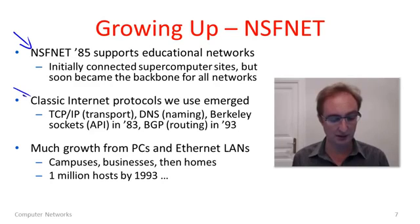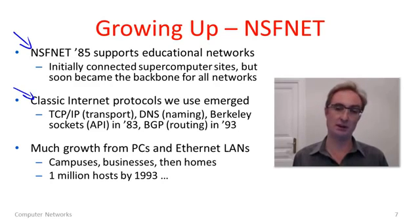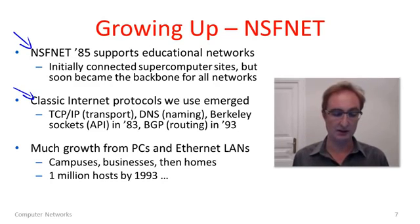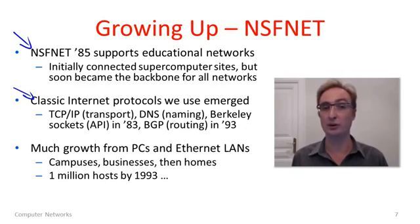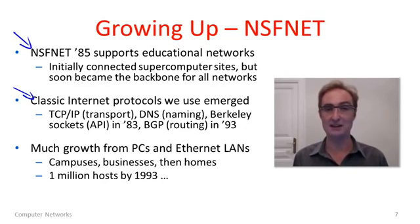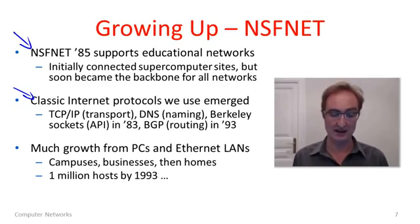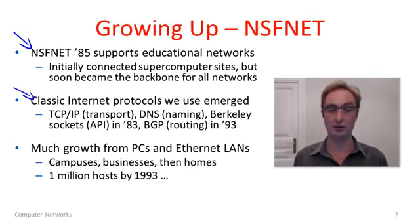It's during this period — a tremendous growing-up period of a decade or more — that the classic internet protocols as we know them today emerged. TCP/IP, DNS, and the Sockets API all emerged around 1983. Internet routing in the form of BGP, a protocol we'll get to later in the course, took a little longer to emerge in its modern form but was around by 1993.